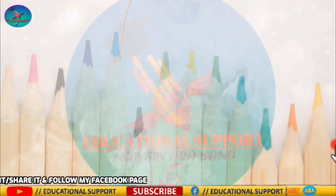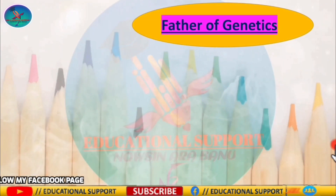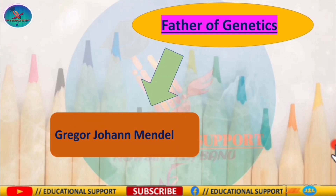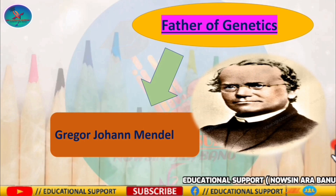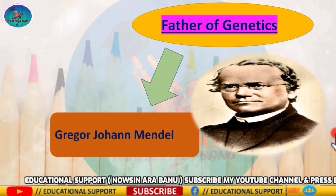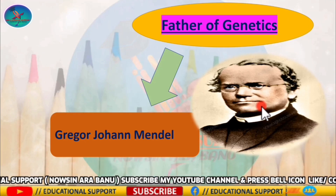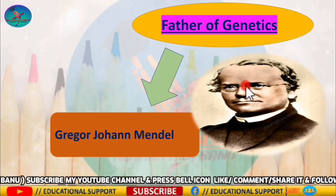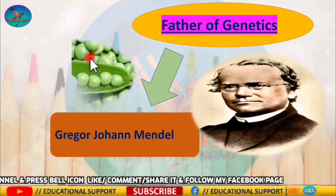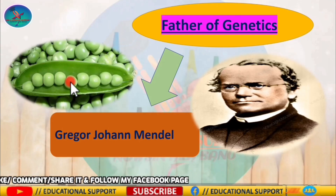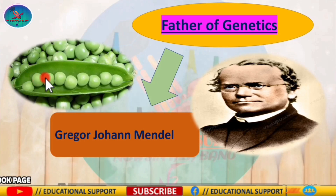Did you know who is the father of genetics? In 1865, Gregor Johann Mendel was the first to describe the elements of heredity — that is, the gene. His observation and analysis of the observable features of pea plants led him to conclude that specific traits were passed on unchanged from a parent plant to the next generation.